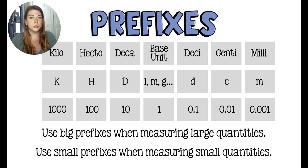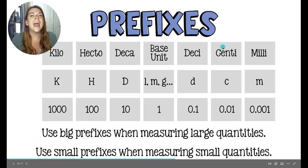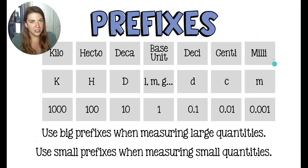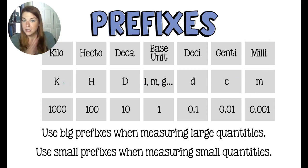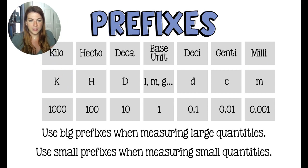The big prefixes are used when the quantity you're measuring is large, and you use small prefixes when you're measuring small stuff. If I was measuring the mass of an elephant, I would not measure him in milligrams — I would measure him in kilograms because he's going to be big. I would measure an ant maybe in milligrams. Medicines are measured in milligrams. You wouldn't measure that in kilograms. Kilograms are kind of like pounds — they're pretty big.